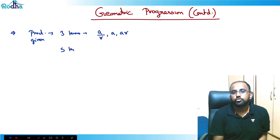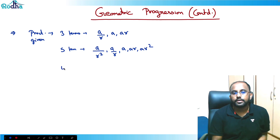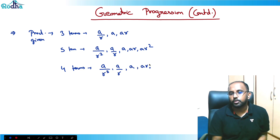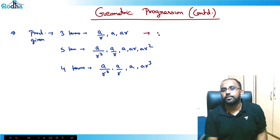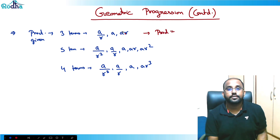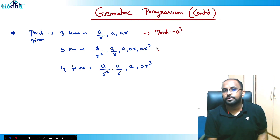If there are five terms, we assume them as a/r², a/r, a, ar, ar². For four terms, we assume them as a/r³, a/r, a, ar³. The aim is that when the product is given, r gets cancelled when we multiply — for three terms the product is a³, for five terms it's a⁵, and for four terms it's a⁴.